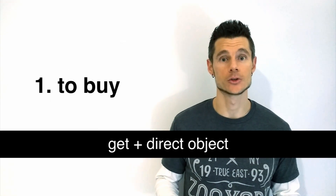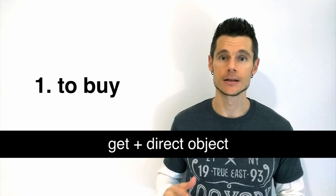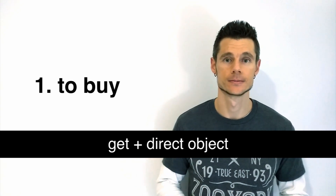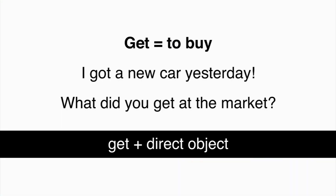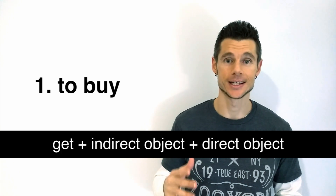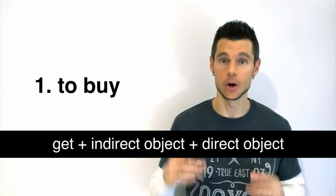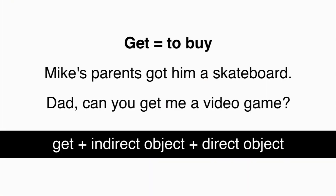GET can mean to buy. The structure used is GET plus direct object. I got a new car yesterday. What did you get at the market? The structure GET plus indirect object plus direct object can also be used. Mike's parents got him a skateboard. Dad, can you get me a video game?